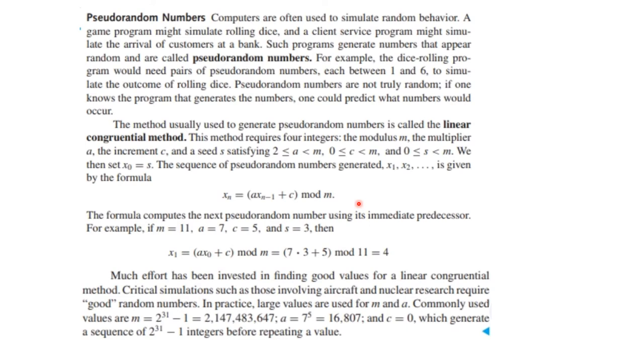For example, here, if m was 11, a was 7, c was 5, and x_0 was 3, what you would do is you would take 7 times 3 plus 5 mod 11. This is going to be 21 plus 5 is 26, and 26 mod 11 is - you divide by 11, you get 2, and the remainder is 4.